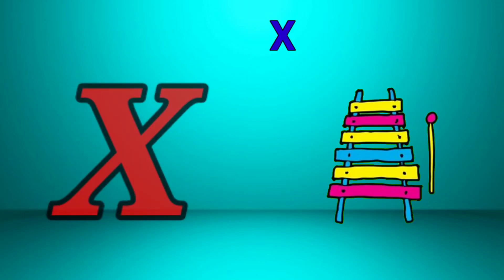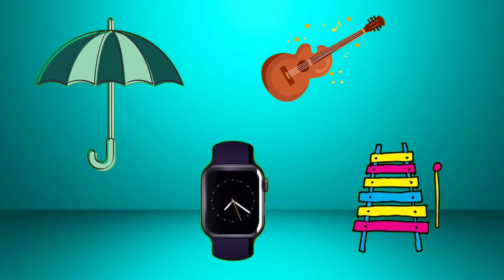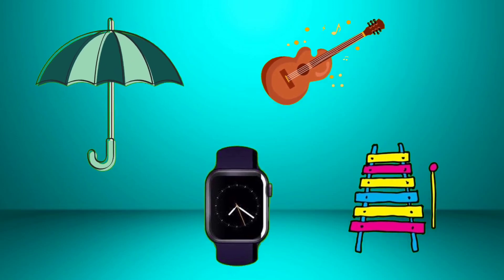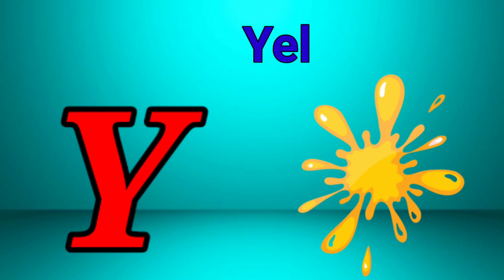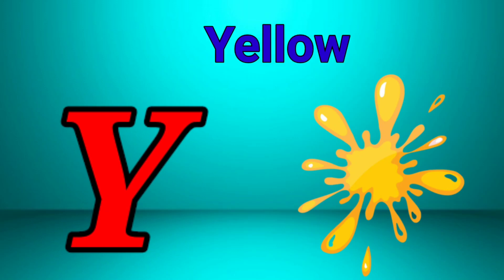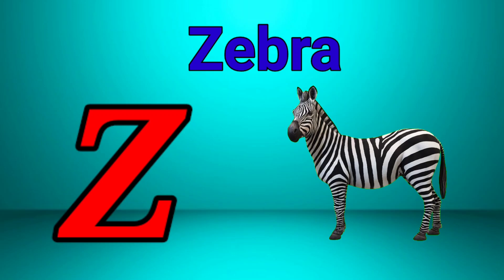X is for xylophone, z-z-z-xylophone. Y is for yellow, ye-ye-yellow. Z is for zebra, z-z-zebra.